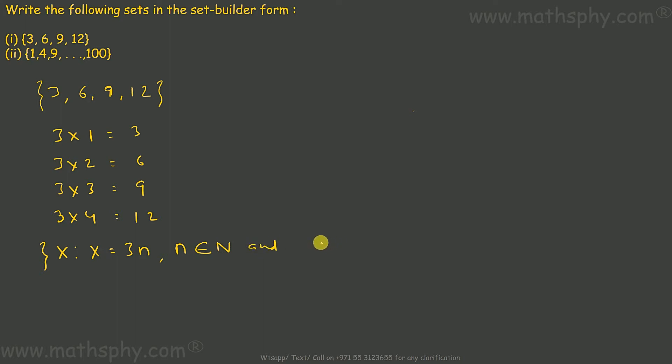And this n is more than or equal to 1 but less than or equal to 4. 1, 2, 3, 4. N is either 1, 2, 3, or 4, not more than 4, not less than 1. All of them should be natural numbers.